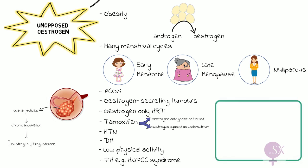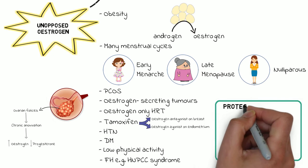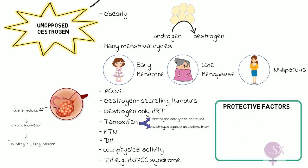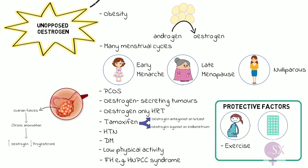There are also some protective factors for developing endometrial cancer. Since many menstrual cycles increase risk, fewer menstrual cycles act as a protective factor. This is seen in multiparous women and women on the oral contraceptive pill. Exercise was also found to be protective, as was smoking.